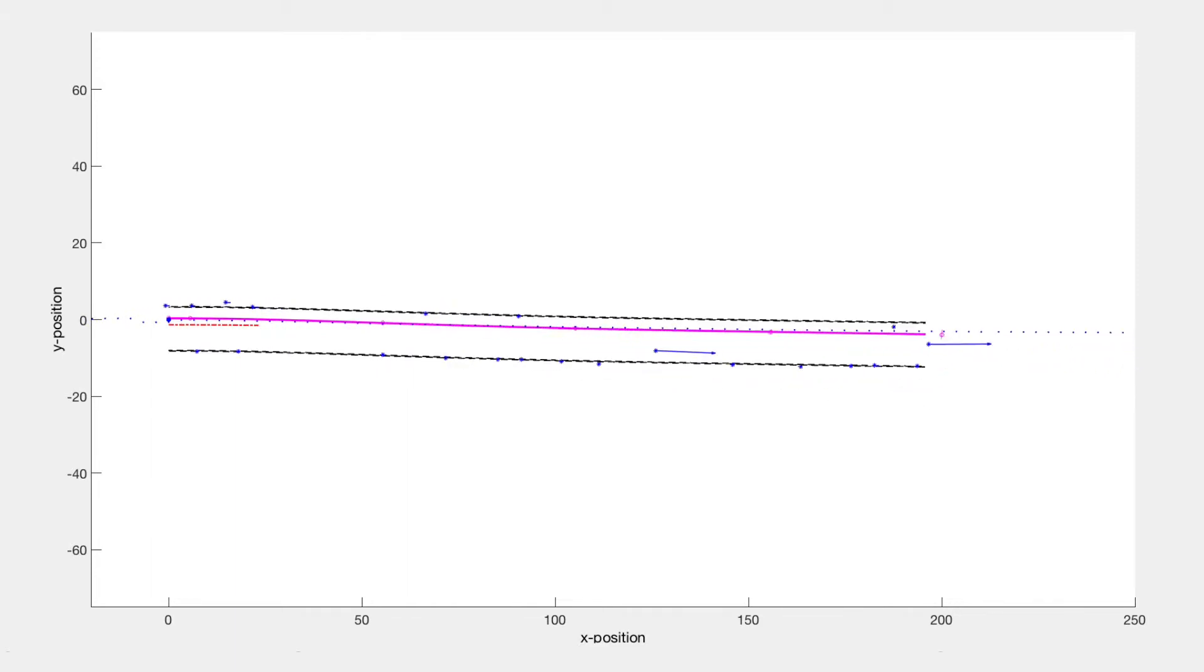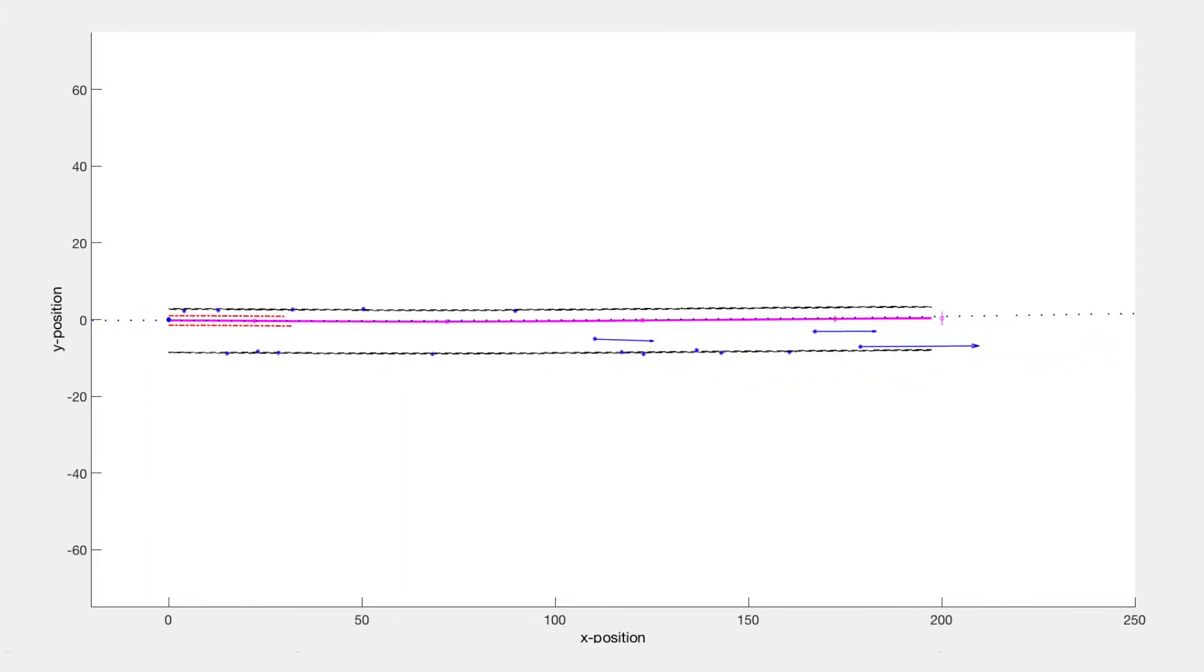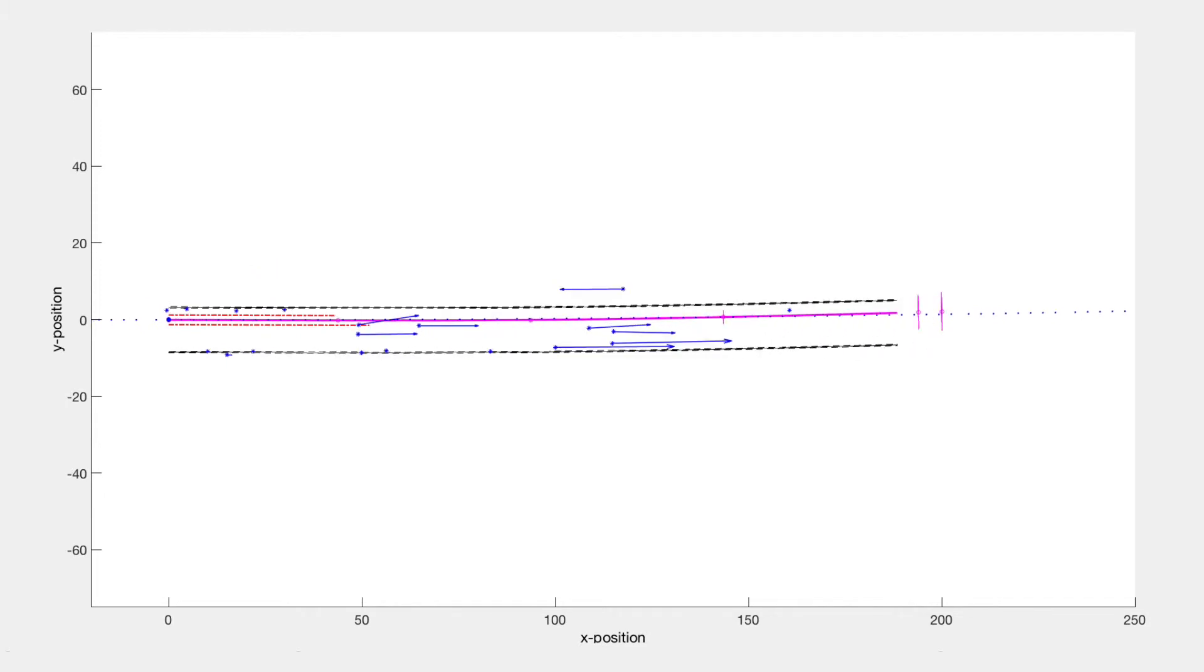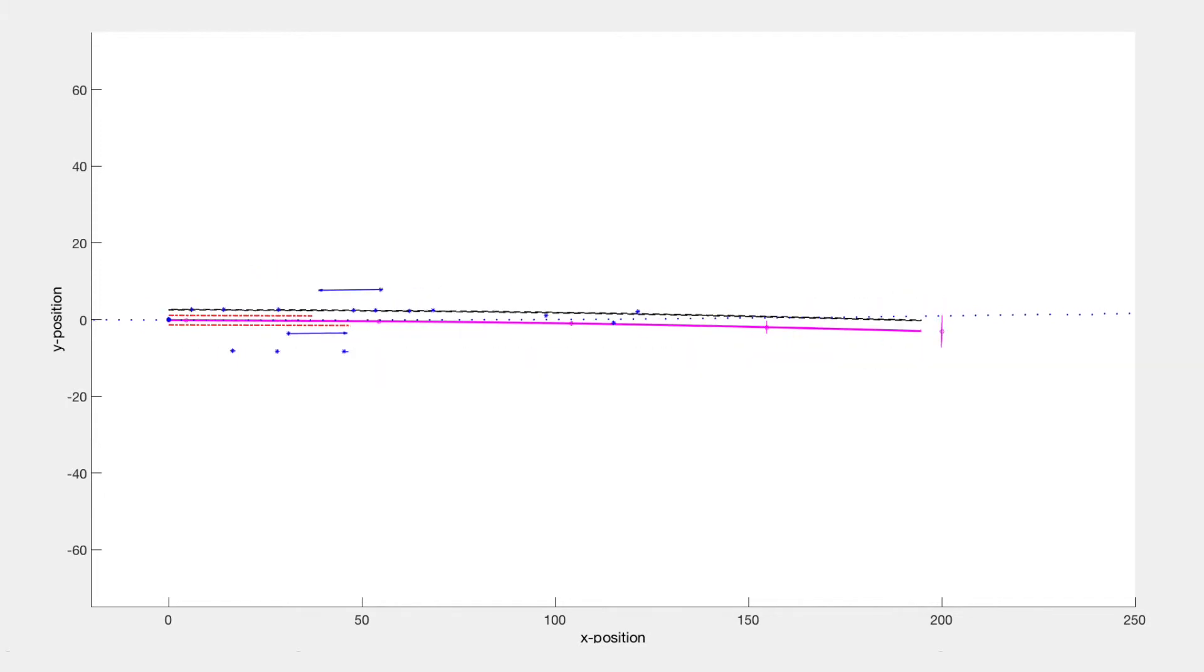Here we see that we are able to fairly accurately describe the shape of the road at also far distances, by including information about the direction in which the leading vehicles are traveling and the shape of the detected guardrails.